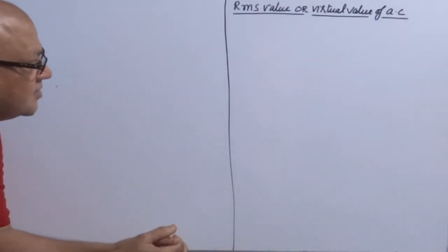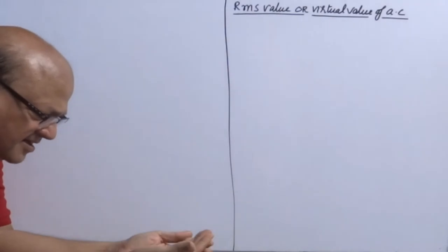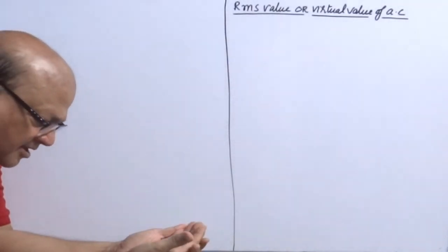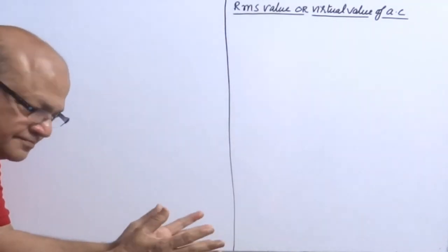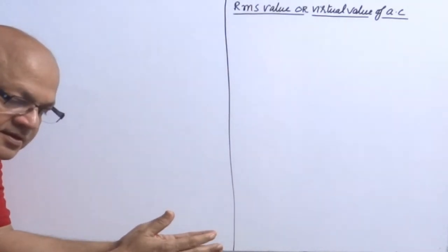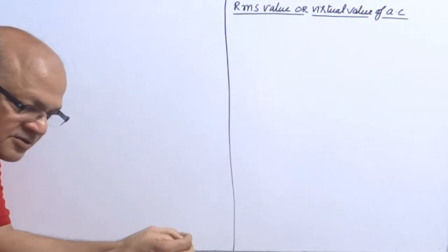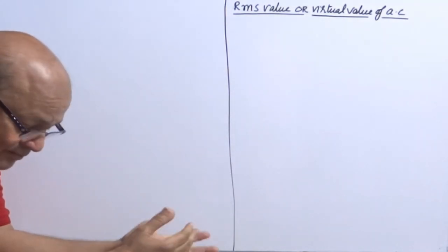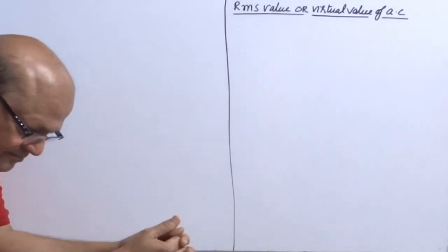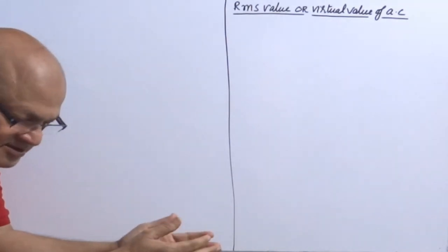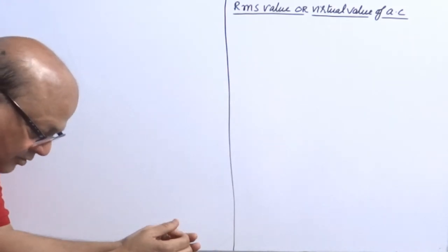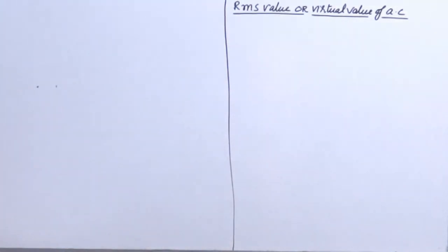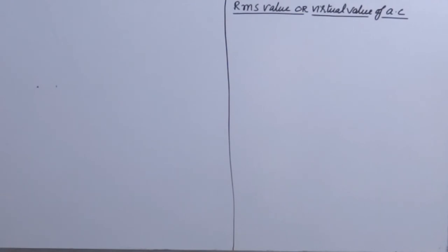Next article: RMS value, or virtual value, of AC. In the previous article on mean or average value of alternating current, I compared the same amount of charge flowing through a conductor when passing DC versus AC. Somewhat the same thing we are going to do here, but we are not comparing charge this time — we are going to compare the amount of heat energy produced.